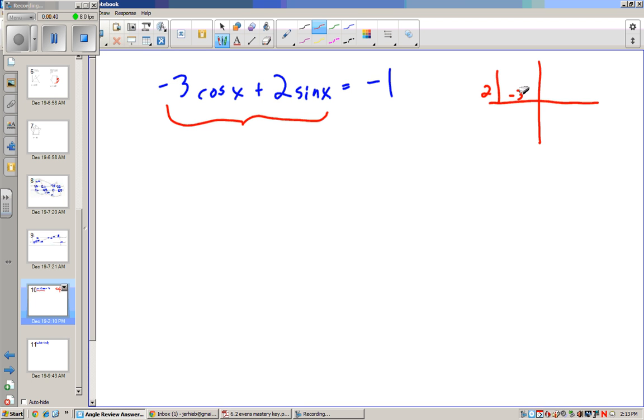We move it up 2 because sine deals with vertical motion. So now if that's negative 3 and 2, our new amplitude is going to be this value right here, the hypotenuse. So if I take 2 squared plus 3 squared equals c squared,